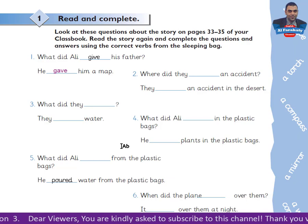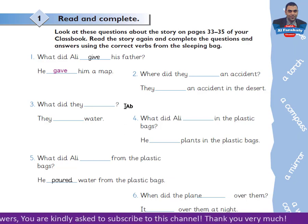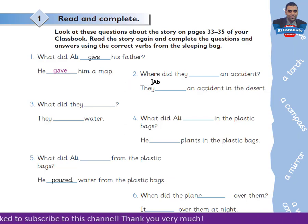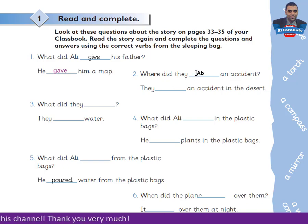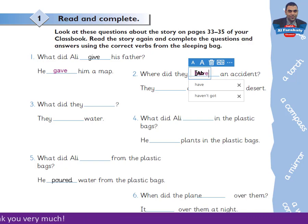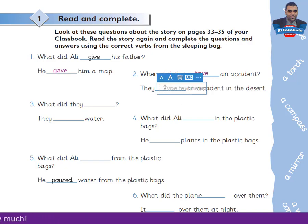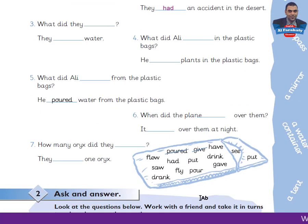Hello again, let's complete the questions and answers. Number 2: Where did they have an accident? They had an accident in the desert. This is the simple past of 'have' — so we have 'have' and 'had'.